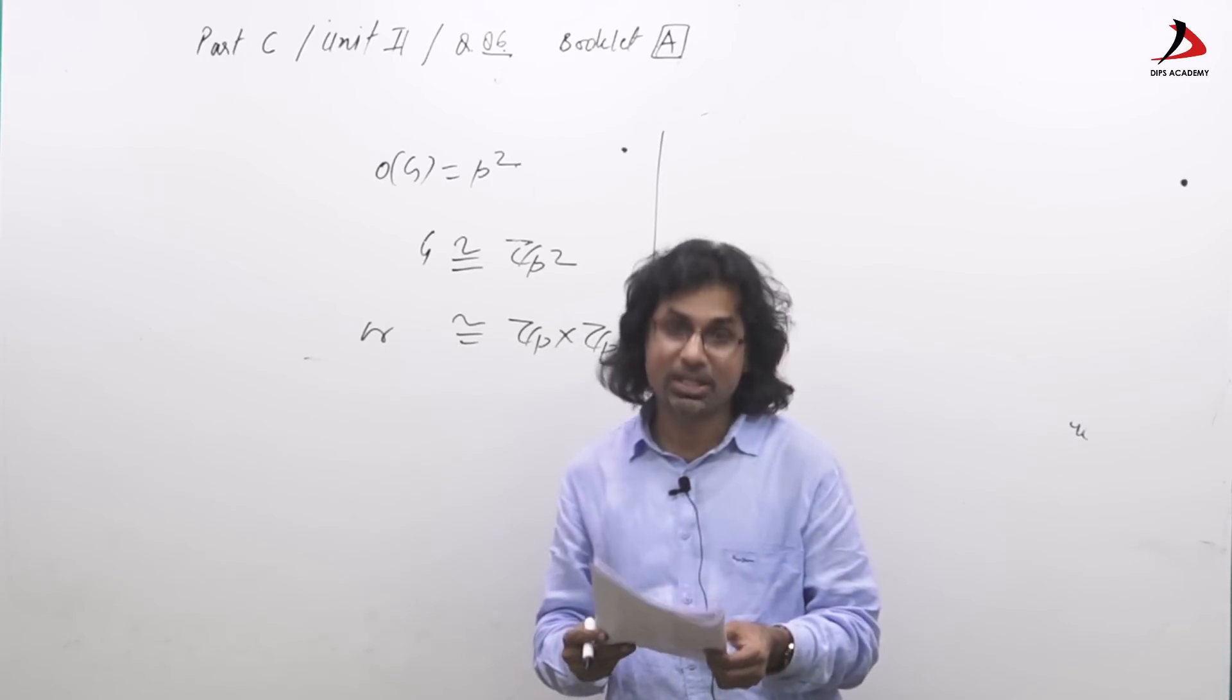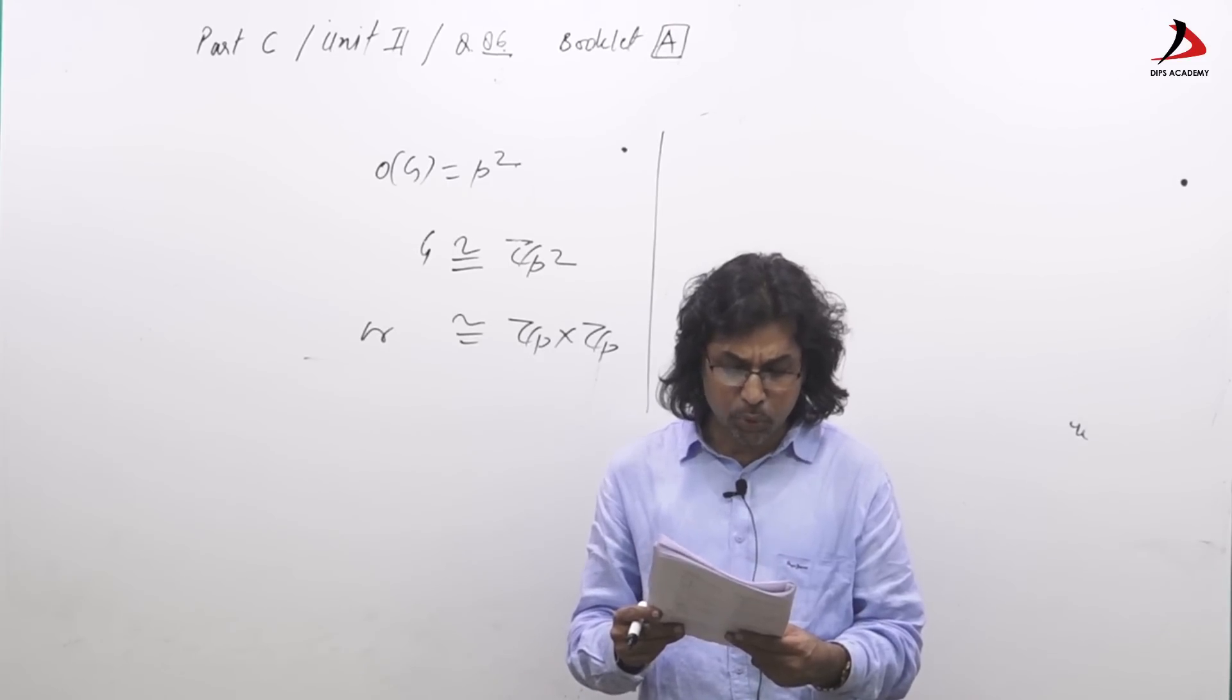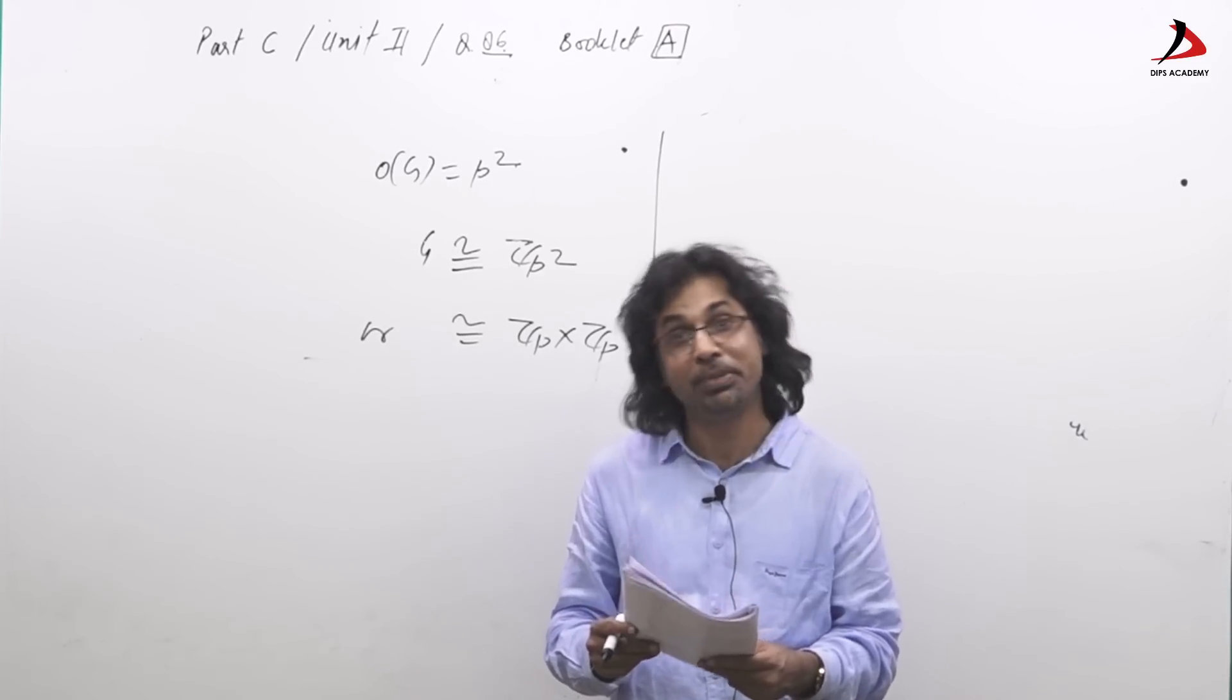The other two options are about rings or integral domain. They say there are exactly two commutative rings of order P square.